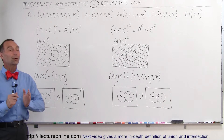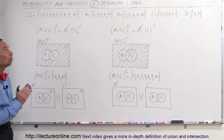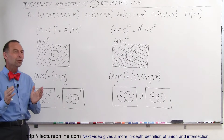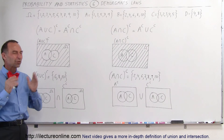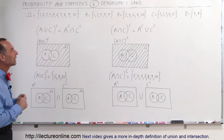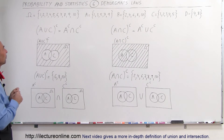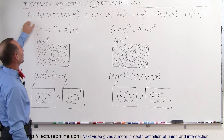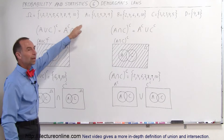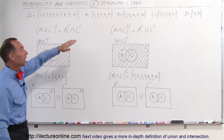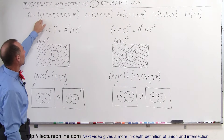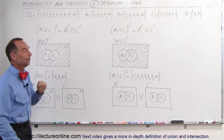Welcome to Electron Online. Now we're going to talk about De Morgan's Laws. They're a little bit confusing, so let's try to make sure we make this clear. First of all, here we have what we call a sample space. All the possible outcomes of the sample space are the numbers 1 through 10.